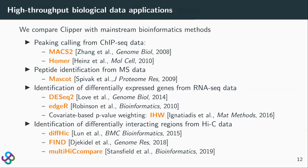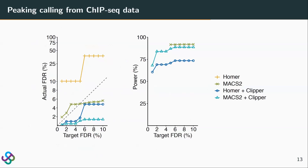We compare Clipper with some cutting-edge bioinformatics tools. For peak calling, we found that surprisingly the Homer method cannot reliably control the FDR, while the max score can control the FDR when the target FDR is quite large. Using Clipper as an add-on to each method for setting the cutoff and calling peaks, we found that we can reliably control the FDR while achieving very good power.